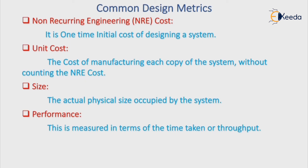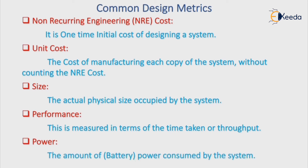The next parameter is power — the amount of power consumed by the system from the power unit or battery supply. The system must consume very less power. If we consider an ideal system, it should include less NRE cost, less unit cost, size must be as small as possible, performance must be high, and power consumption must be low.